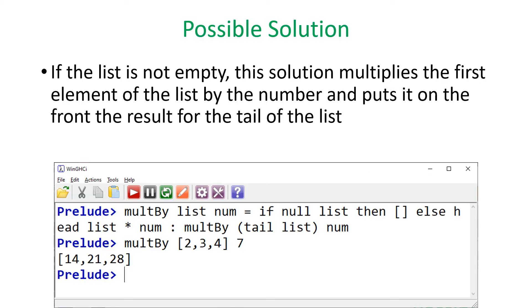Here's a possible solution. Again, we check and see if the list is empty. If the list is empty, then we just return an empty list. Otherwise, we take the head of the list, multiply it by the number, and concatenate it to the beginning of recursive call to the tail of the list.